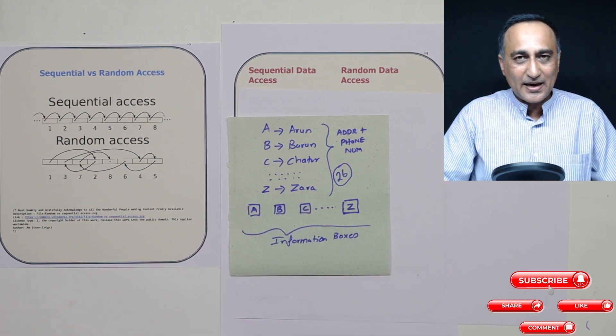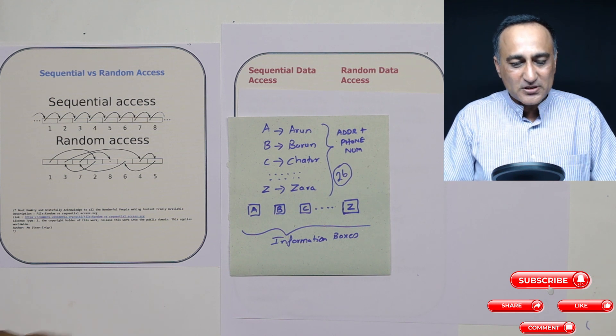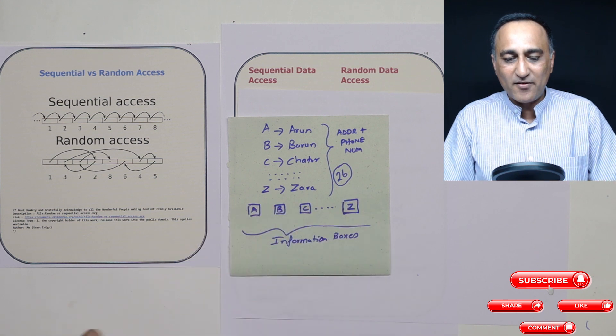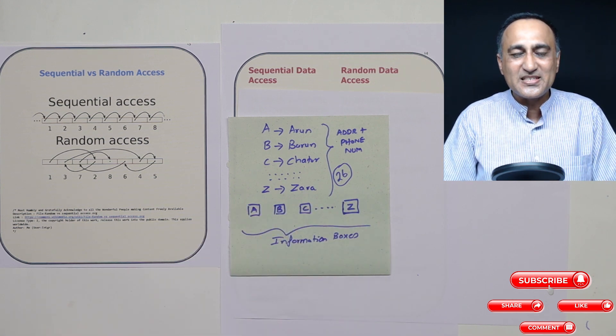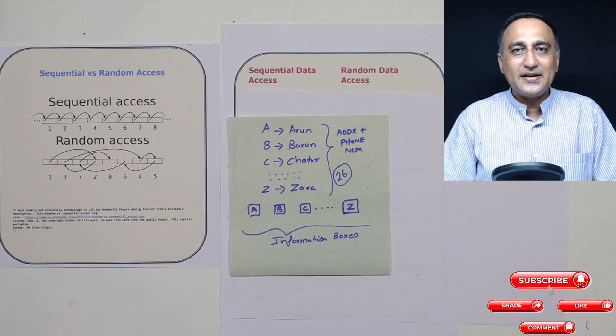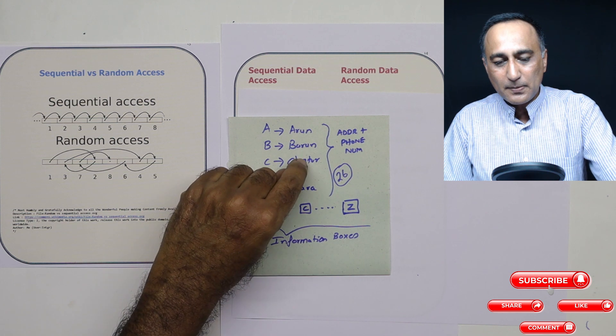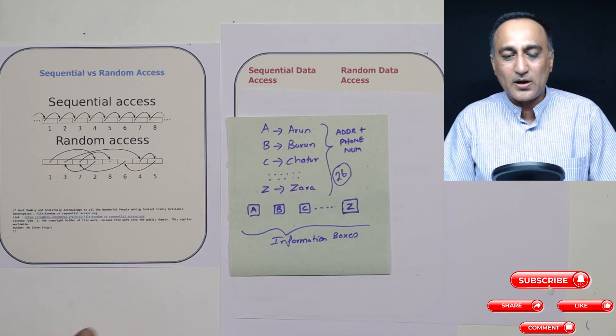And in each of the boxes, I have kept the details of one person, phone and address. So let's say for example, somebody is working for me, I say just get me Chatur's details. So he or she will directly go to box C, pick up Chatur's information and give it to me what is his address and phone number.